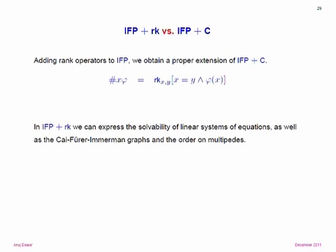The ability of counting that Immerman proposed was too weak to allow this kind of counting. So this is, in that sense, a generalized form of counting. And you can see it's generalized in the sense that we don't need counting once we have this — to count the number of elements satisfying formula phi, just take the rank of the matrix which is zeros everywhere except along the diagonal where phi is true. That rank is just the number of elements satisfying phi.